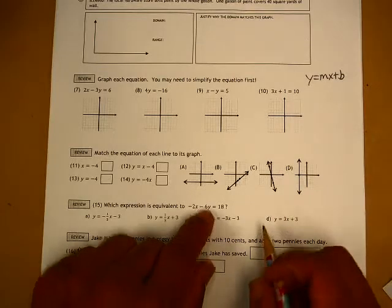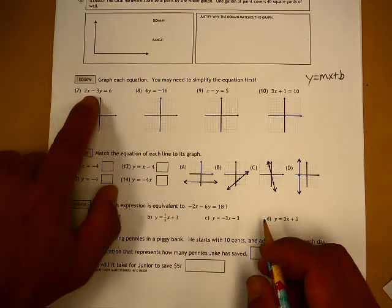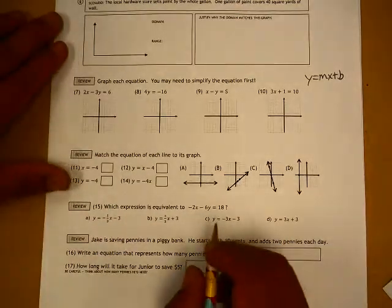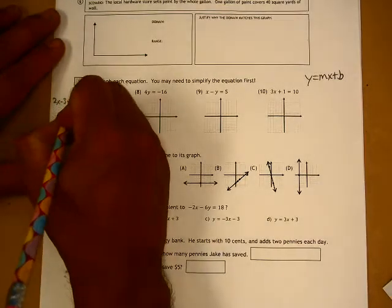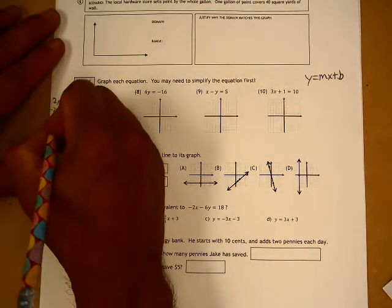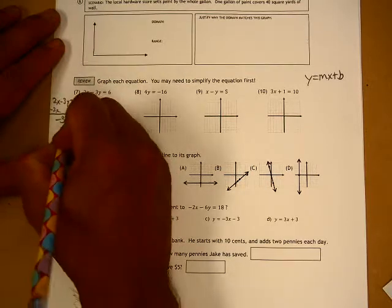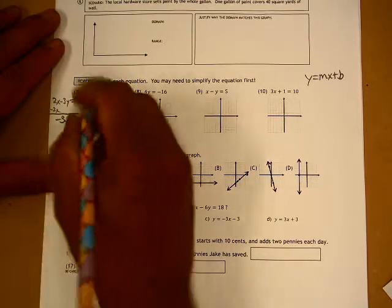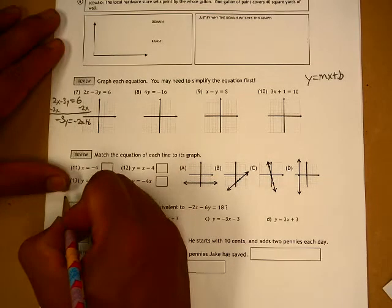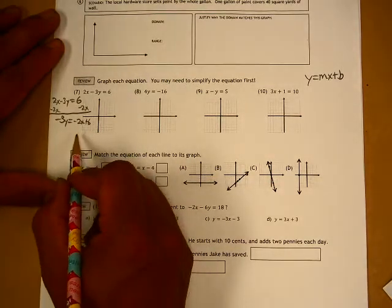So we need to get y by itself. So this one here, I would start by subtracting 2x from both sides. So negative 3y equals minus 2x plus 6. And then I divide everything by 3.